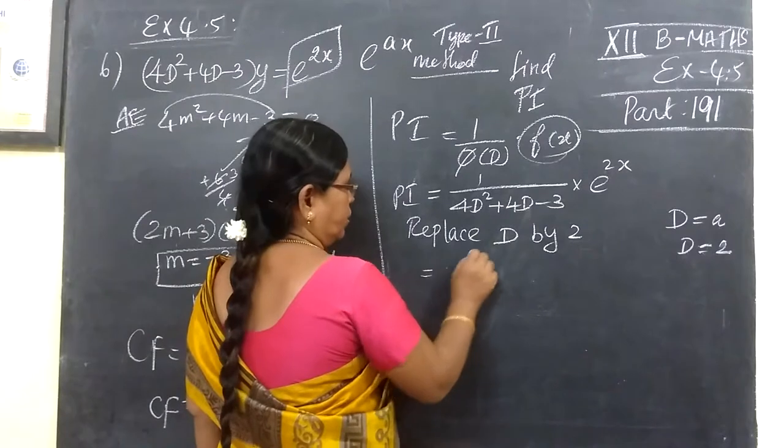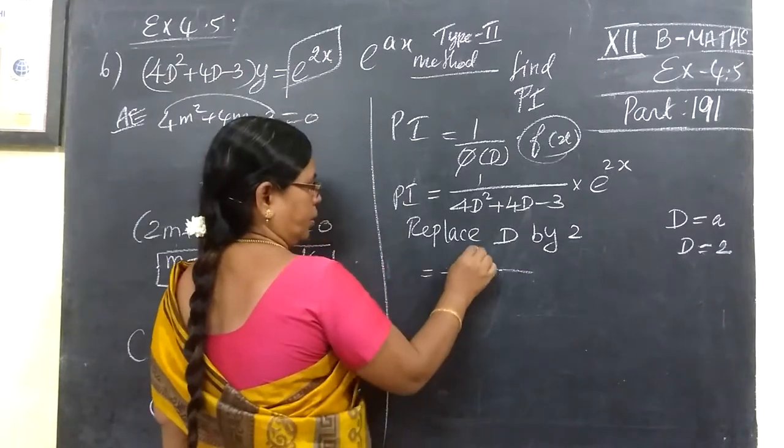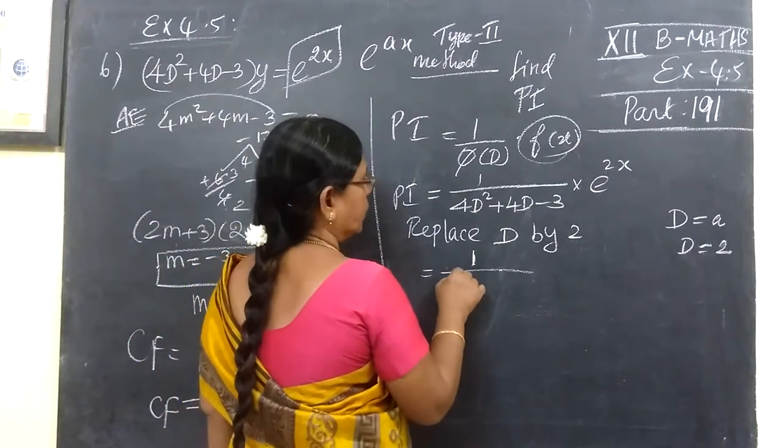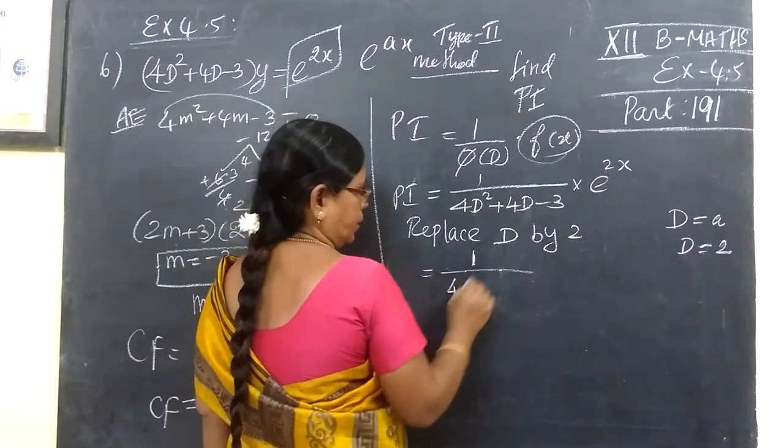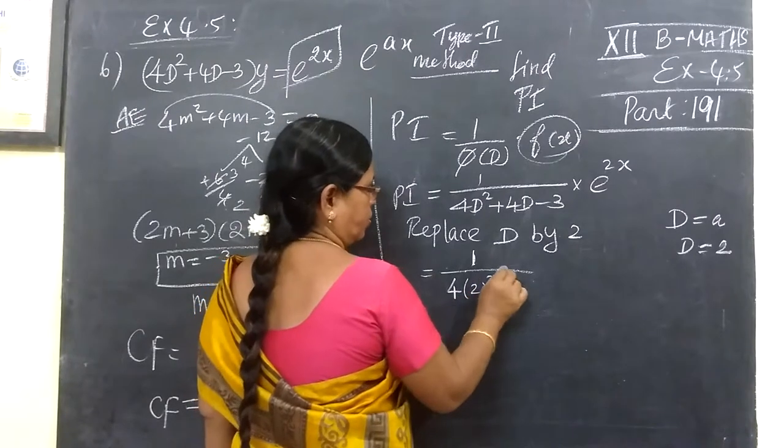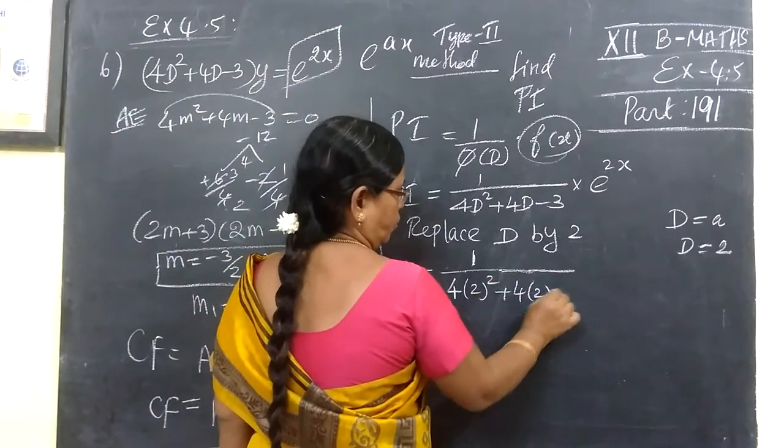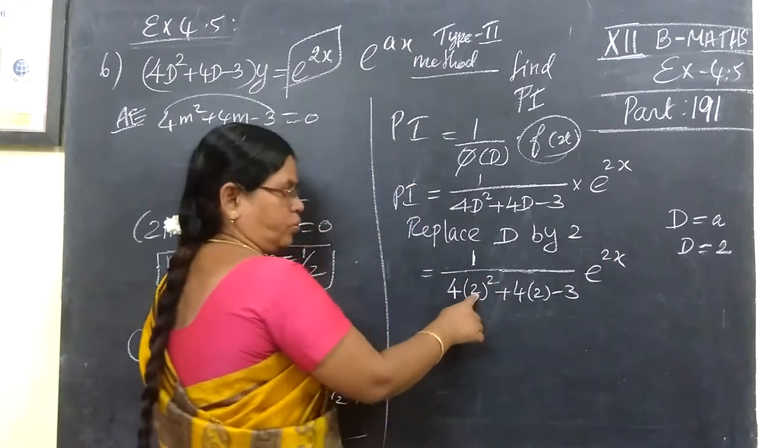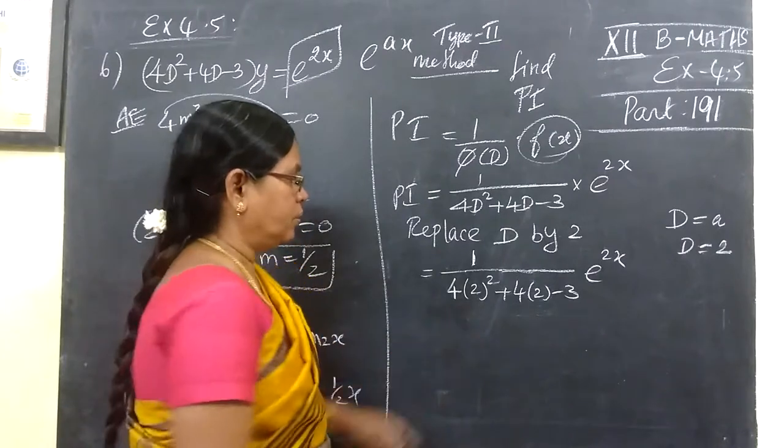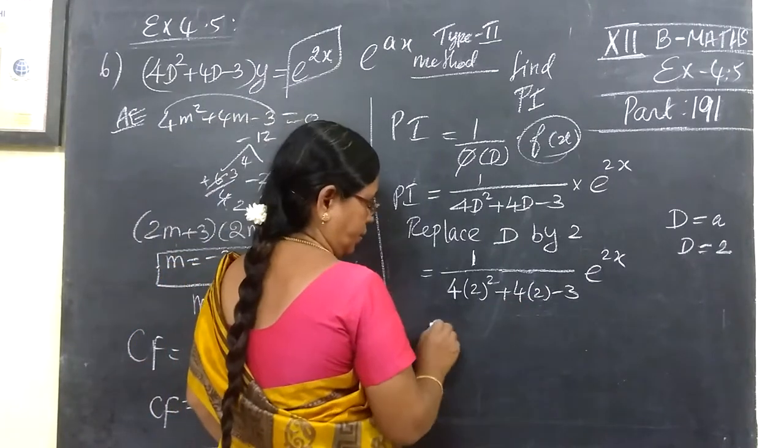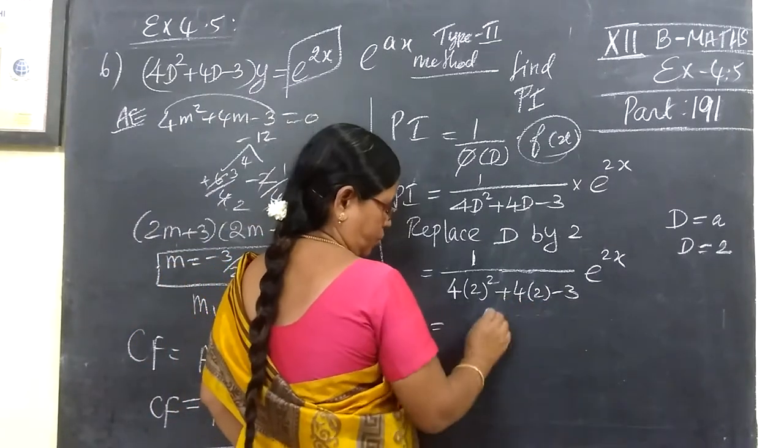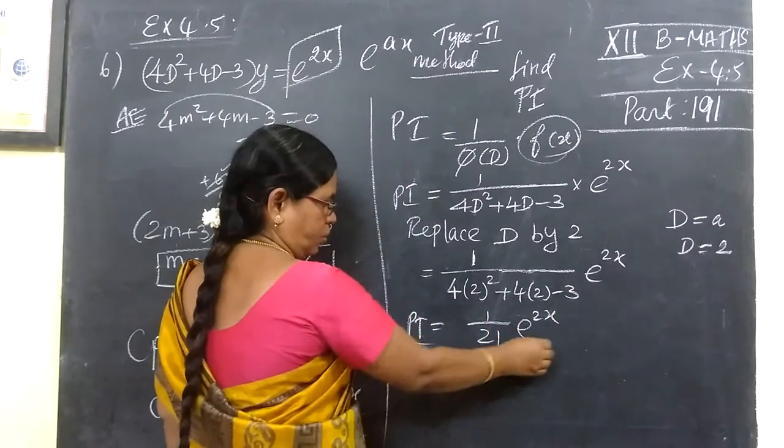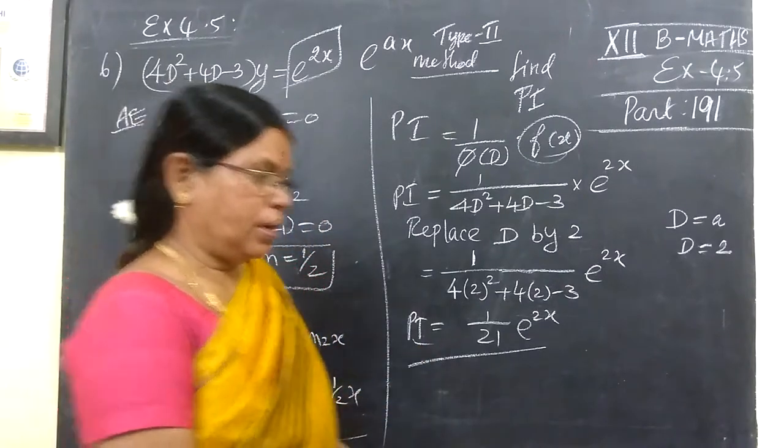So that is equal to 1 by 4D² plus 4D. D appears to be 2. Then 4 times 2 minus 3, then e^(2x). So 2² is 4, then plus 8, so 24. So 1 by 24 e^(2x). So this is particular integral.